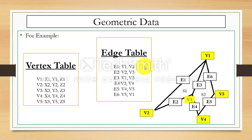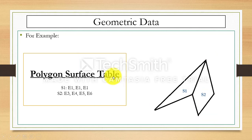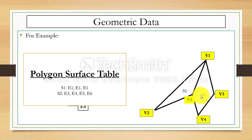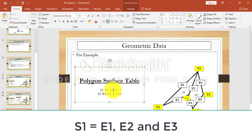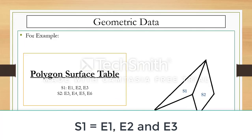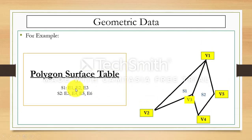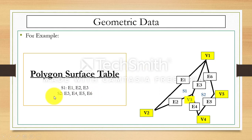So this is the edge table. We have five vertices and six edges. Now we have the polygon surface table. We have two surfaces: s1 and s2. Surface s1 is represented by three edges — e1, e2, and e3. For surface s2, we have edges e3, e4, e5, and e6. This is the polygon surface table.